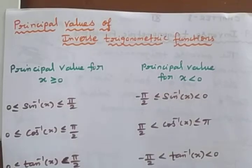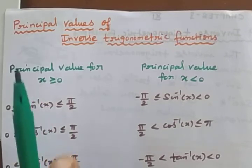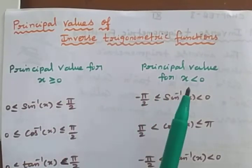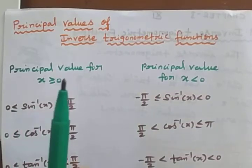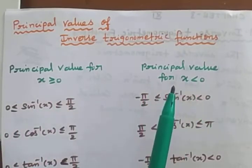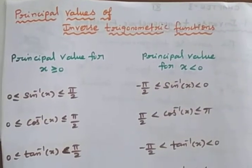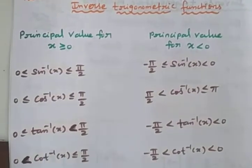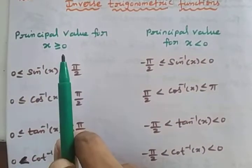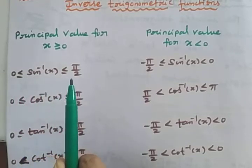Next, principal values of inverse trigonometric functions. We find principal values for x ≥ 0 and x < 0 separately. For sin⁻¹(x), when x ≥ 0, the principal value satisfies 0 ≤ sin⁻¹(x) ≤ π/2, which is in the positive interval.